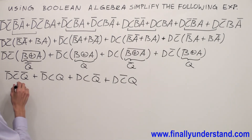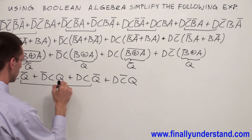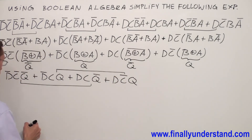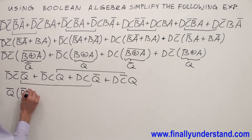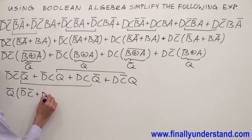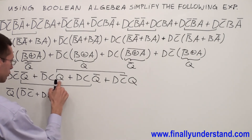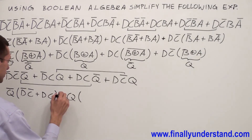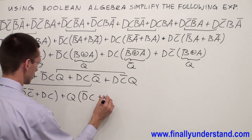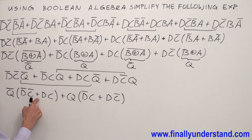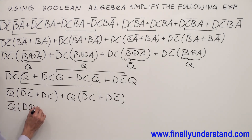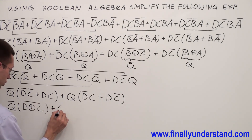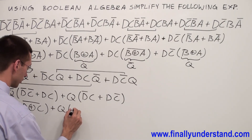Let's see what we can factorize from this expression. I have Q̄ and Q. I'm going to factorize Q̄ from these two terms, and Q from these two terms. So I get Q̄ and inside the parentheses: D̄C̄ or DC, plus Q and inside the parentheses: D̄C or DC̄. Again, this is nothing else but exclusive NOR and exclusive OR.